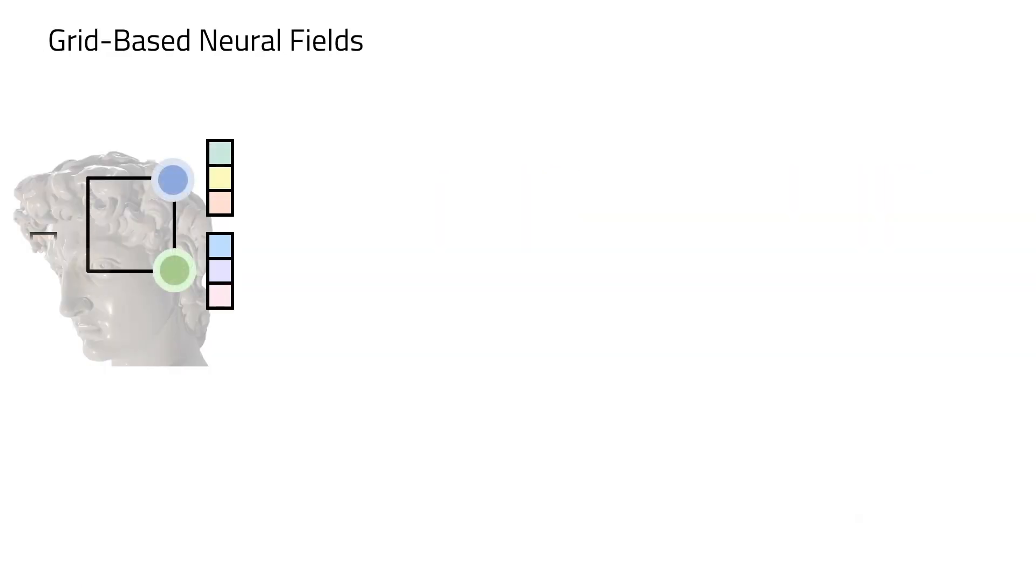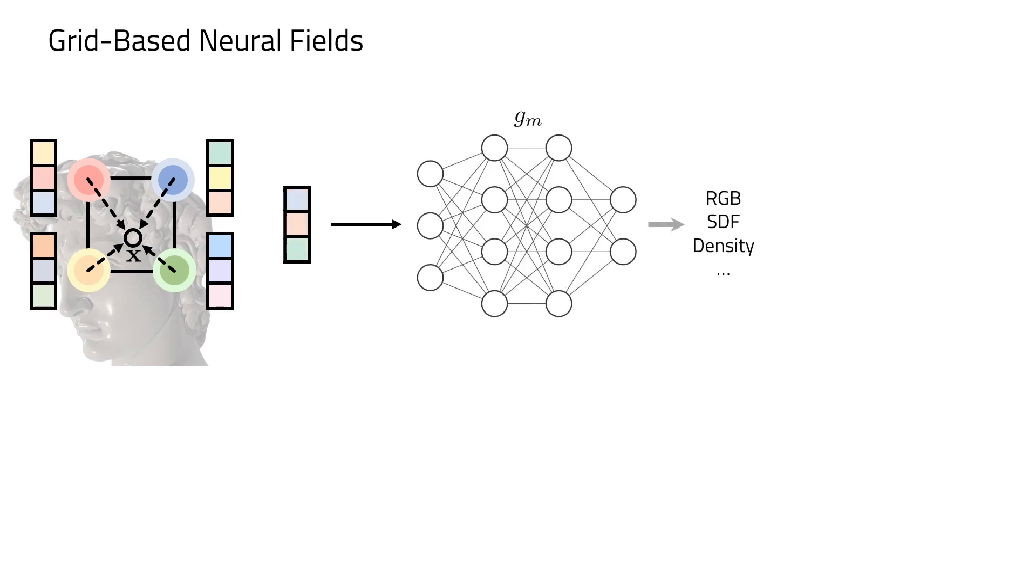State-of-the-art neural fields typically allocate local features in a grid-like structure. The features at a query point are obtained via linear interpolation, which are then decoded into RGB value, SDF, density, etc.